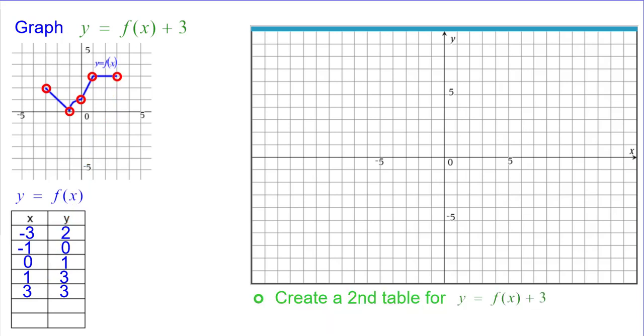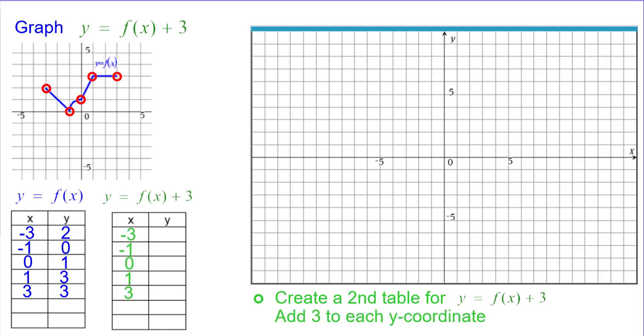We're going to create a second table for y = f(x) + 3. We're going to add 3 to each y-coordinate because that's what the equation tells us to do.